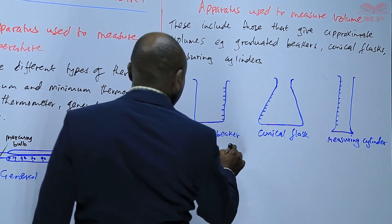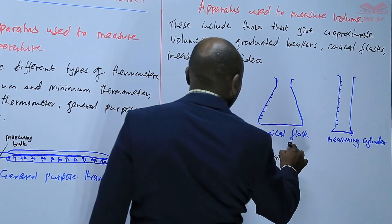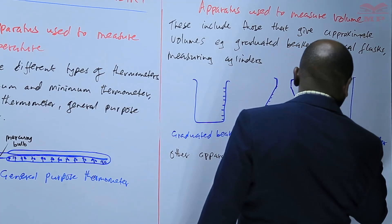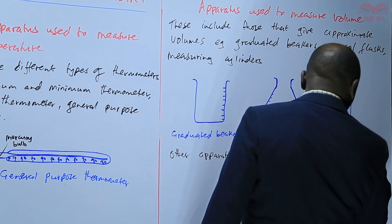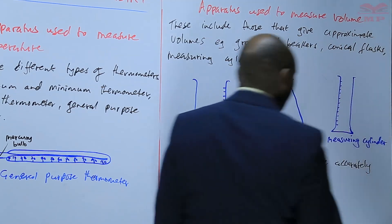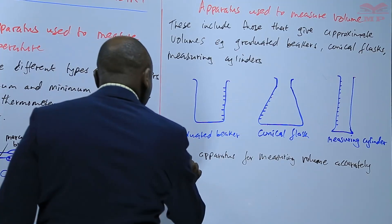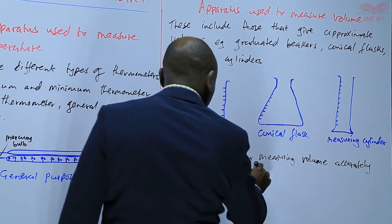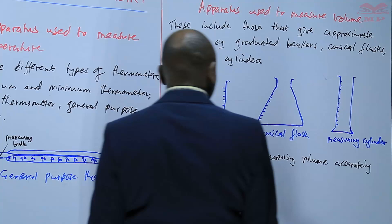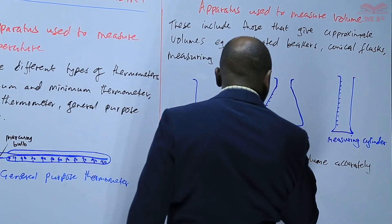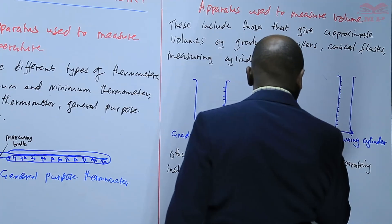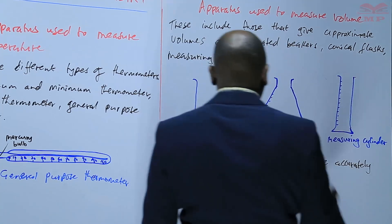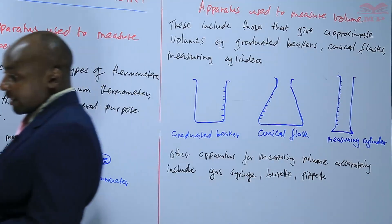And then we also have other apparatus for measuring volume accurately. These ones are more accurate, where there is a very high level of accuracy required. They include: we have the gas syringe or the syringe basically, we have burette, we have pipette. So basically, these ones are more accurate in terms of their measurements.